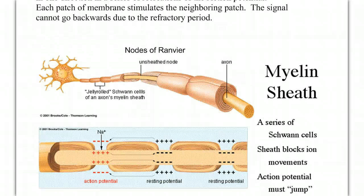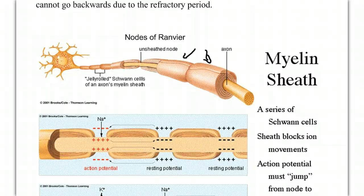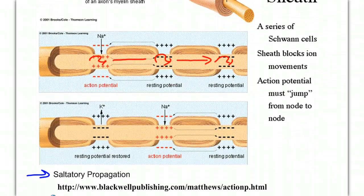We have one last thing to review as we talk about the propagation of the action potential down the neuron, and that's what happens to axons that are myelinated. Here's an axon with a myelin sheath of individual Schwann cells, and the presence of a myelin sheath actually speeds up the rate of transmission. There are gaps between these cells called nodes of Ranvier, and as we move down the axon, an action potential will fire here, it will skip this section, and a new action potential will fire here, and we get to skip this section.